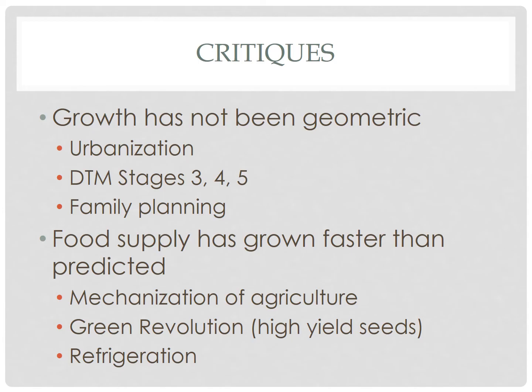But there have been many critiques of Malthus over the years. As Malthus was concerned with two factors — food and population — both could have potentially proven his theory incorrect. For example, population has not grown geometrically as he predicted. Rural to urban migration driven by job opportunities in urban factories led families to have fewer children, which ultimately led to a slowdown of the natural increase rate. We know that this is called stages 3, 4, and 5 of the demographic transition. It's worth remembering that Malthus was living in the first country to go through that transition, and thus doesn't have the hindsight that we have now in the 21st century.